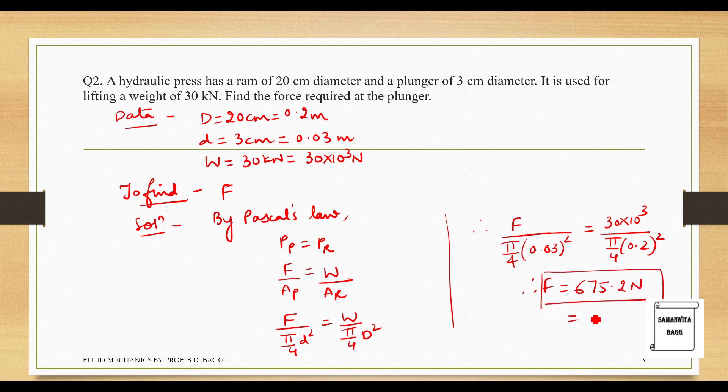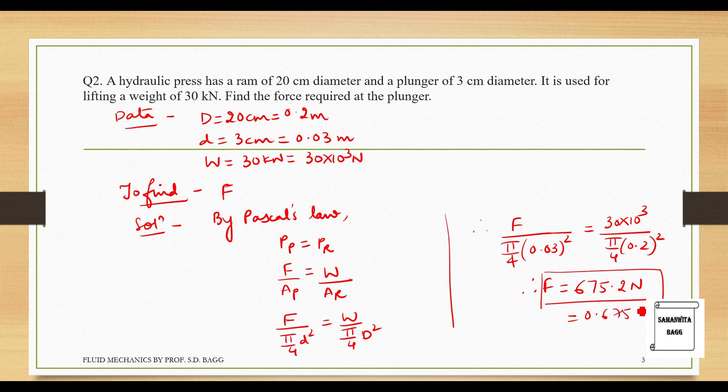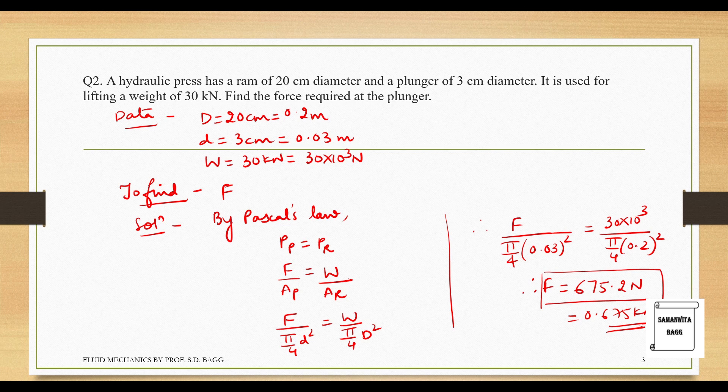If you want, you can also write this as 0.675 kN. Just divide by 1000. So, with this, I end the session. I hope you have understood the numericals on Pascal's law. If you have any doubts, please write to me in the comment section. Don't forget to like, share and subscribe to the channel. Hit the bell icon for latest video updates. See you in the next session. Thank you.